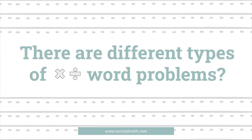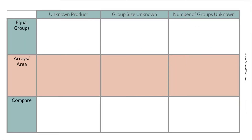Just like I said in many of the other multiplication and division videos, I know that it seems weird that there are different word problem types. When you're thinking about these two operations, you kind of feel like it's just regular multiplication and division. But that's just not the case. There are several different forms, and in this video we're going to concentrate on arrays and area.